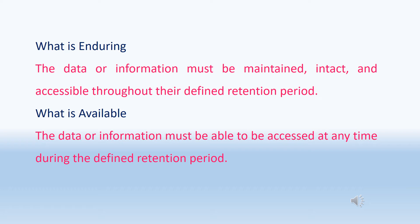What is enduring? Data or information must be maintained intact and accessible throughout the defined retention period. For example, if the batch manufacturing record retention period is 5 years, the record should be maintained undamaged and stored securely for 5 years. What is available? Data or information must be accessible at any time during the defined retention period, meaning data and documents should be easily accessible whenever required.